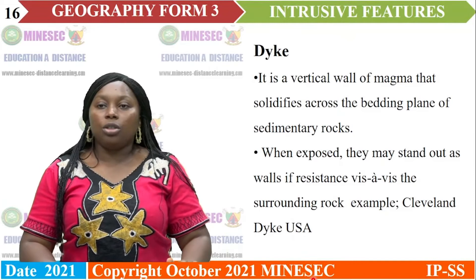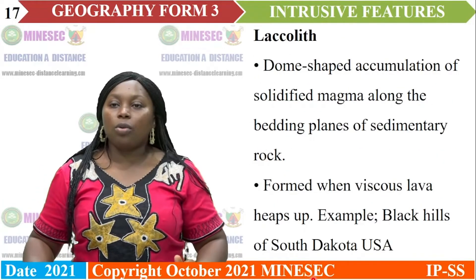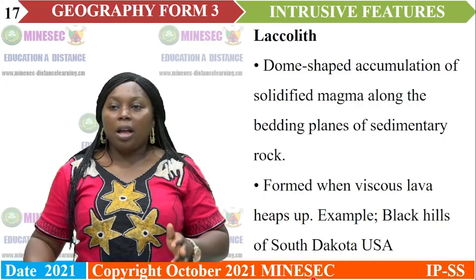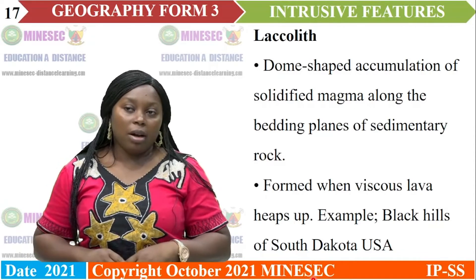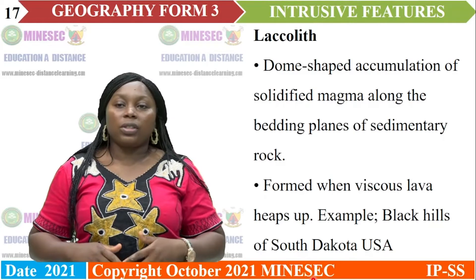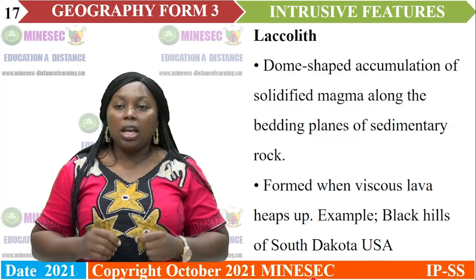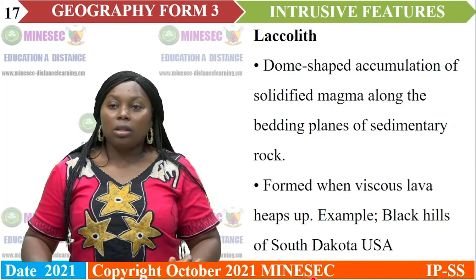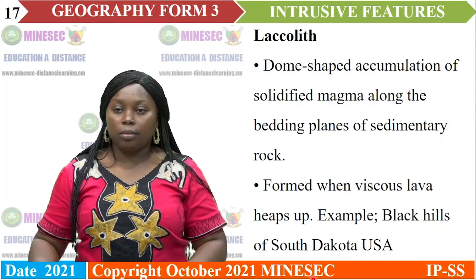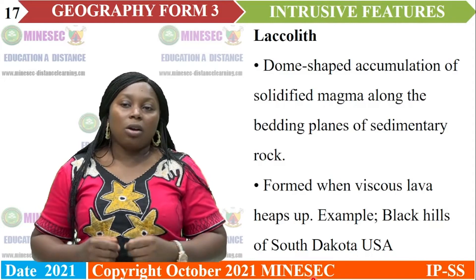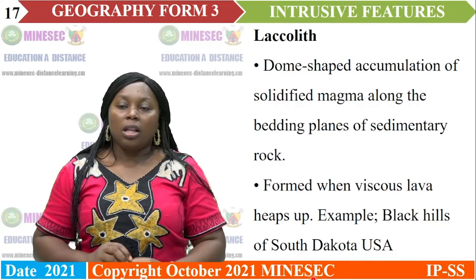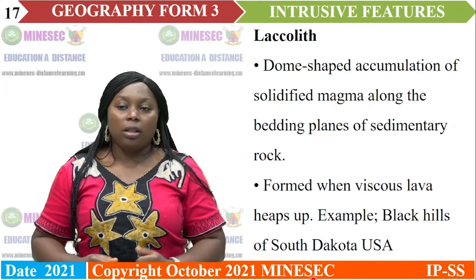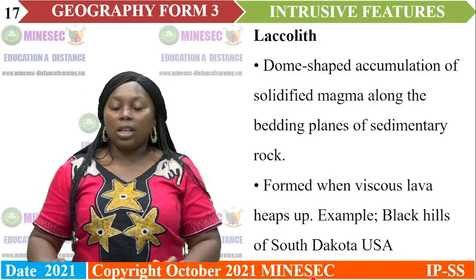The third intrusive feature is the laccolith. A laccolith is a dome-shaped accumulation of solidified magma along the bedding planes of sedimentary rocks. They are formed when viscous lava heats up. For example, the Black Hills of South Dakota in the USA.